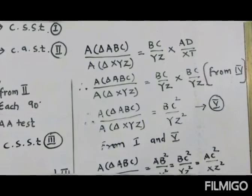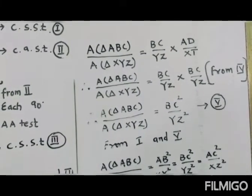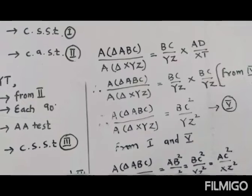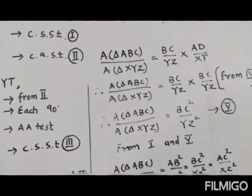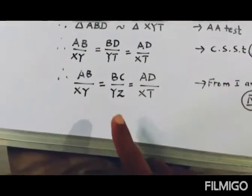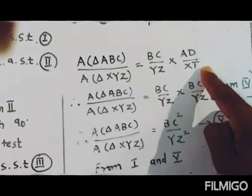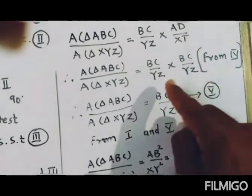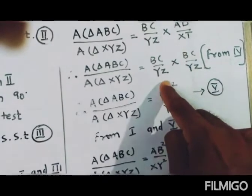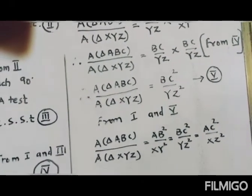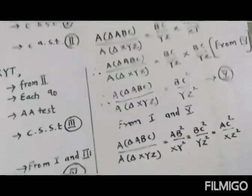Coming to our original part: area of triangle ABC upon area of triangle XYZ equals the product of base and height of ABC over the product of base and height of XYZ — that is BC times AD upon YZ times XT. From number four, BC upon YZ equals AD upon XT. Substituting, we get BC times BC upon YZ times YZ, which is BC² upon YZ². Let us give that number five.